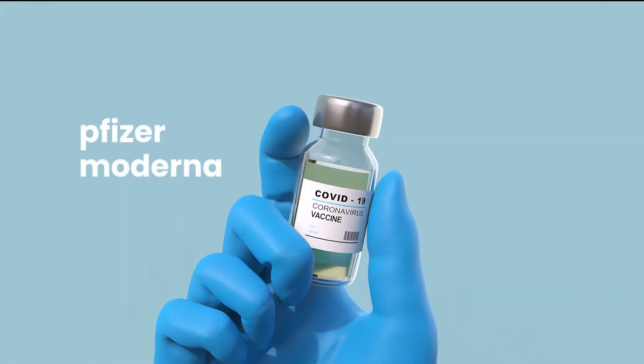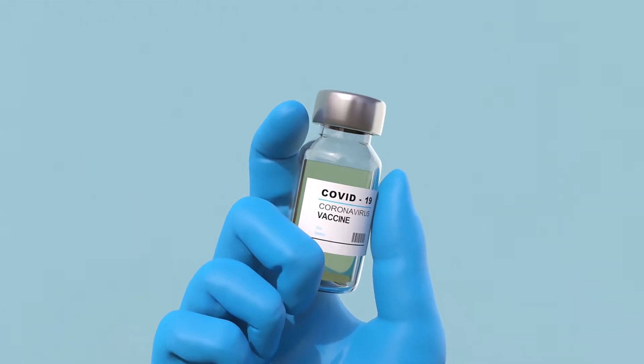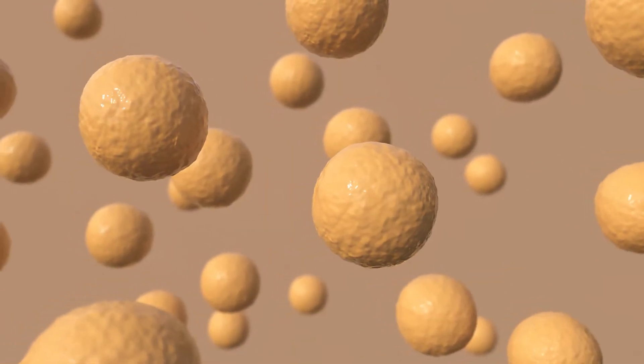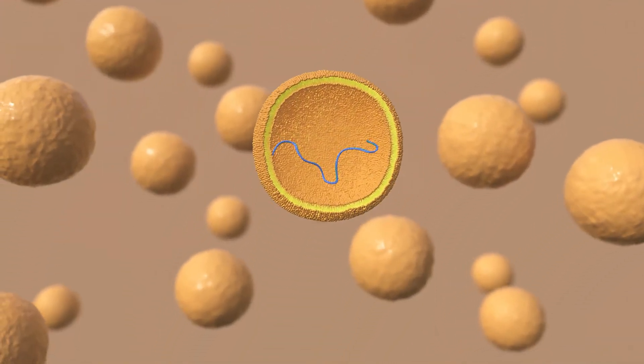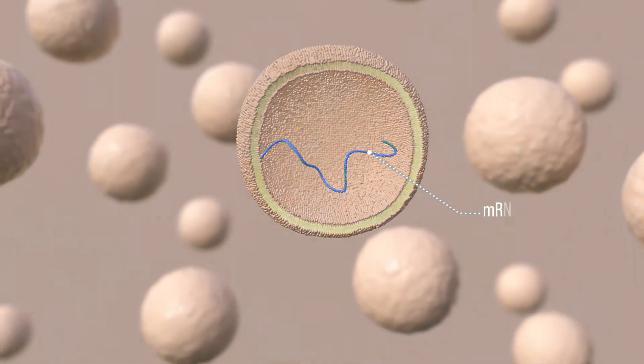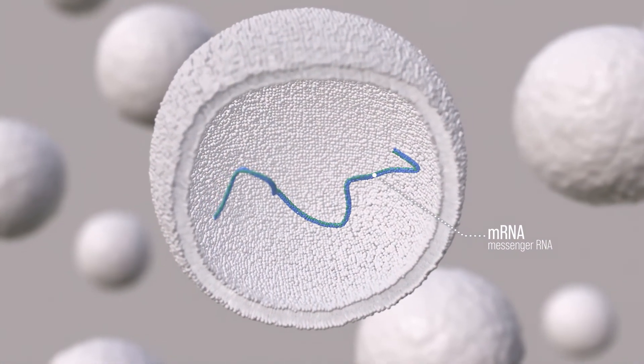Against these coronaviruses, Pfizer and Moderna have succeeded in producing vaccines using mRNA for the first time. The mRNA vaccine technology injects mRNA, which is the blueprint for the spike protein, unlike the existing method that uses the weakened virus or spike protein itself as an antigen.